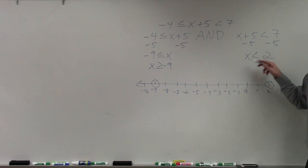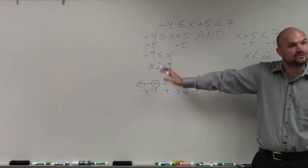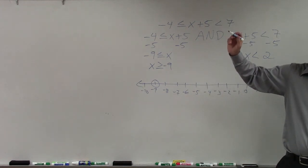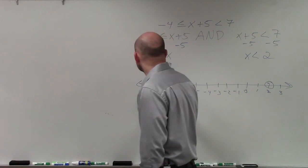So x is less than 2. Since it's less than 2, not less than or equal to 2, is this open or closed? Open. Yeah. OK. Good. So we leave that open. And then, since this is greater than or equal to negative 9, not just greater than, this is going to be closed. Say it one more time. Closed. Closed.